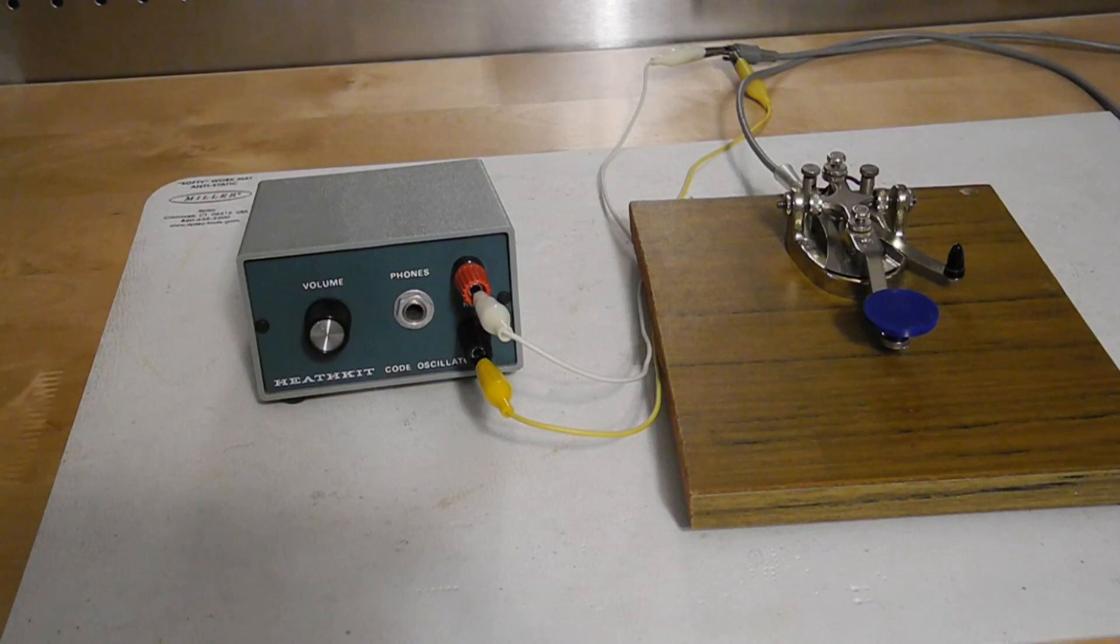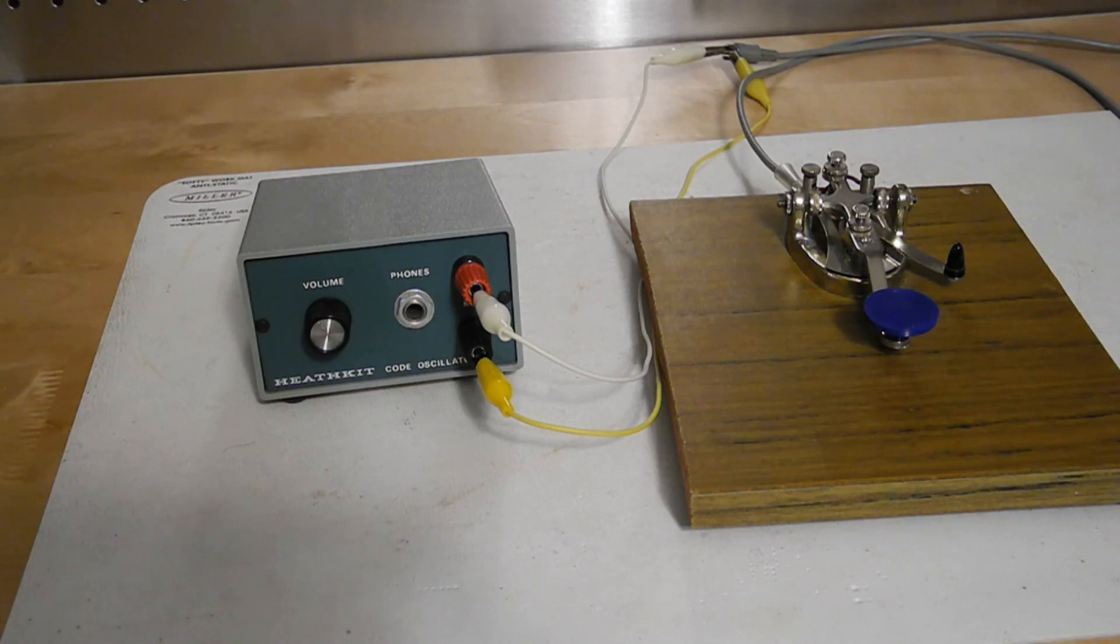Normally it would be used stand alone with a code key for practice but it could also be connected across the key terminals of a ham radio transmitter to produce a side tone during transmitting if the transmitter was one that didn't provide this feature itself. It's compatible with transmitters that use negative grid block keying up to 400 volts DC which included a number of Heathkit transmitters and transceivers of the time.